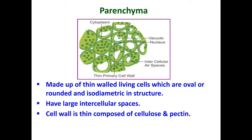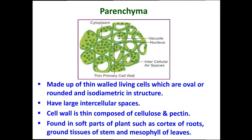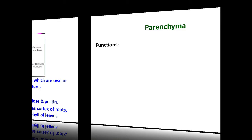The cell wall of parenchyma tissue is very thin and mainly composed of cellulose and pectins. Parenchyma is the most abundant type of permanent tissue, distributed in plant parts such as stems, roots, leaves, flowers, and fruits. It is found in the soft parts of the plant such as the cortex of roots, ground tissues of stem, and mesophyll of leaves.